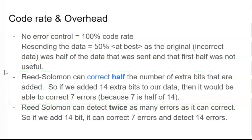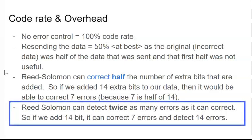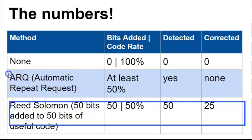Reed Solomon can detect the same number of bits that have been added. So, if I add 14 bits, it can detect 14 errors. Or, if you prefer, it can detect twice as many errors as it can correct. Add 14 bits, correct 7 errors, detect 14 errors.